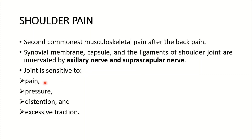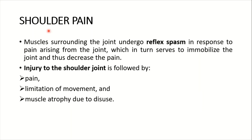The joint is sensitive to pain, pressure, distension and excessive traction. Muscles surrounding the joint undergo reflex spasm in response to pain arising from the joint, which in turn serves to immobilize the joint and thus decrease the pain. Injury to the shoulder joint is followed by pain, limitation of movement, and muscle atrophy due to disuse.